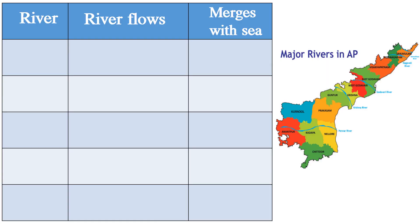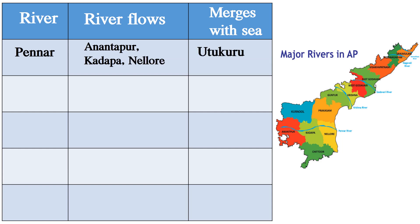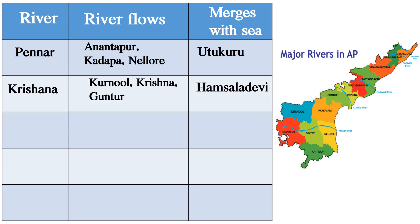Now, let us recap the rivers, where they flow, and where they merge into the sea. First, Penna River flows through Anantapur, Kadapa, and Nellore districts and merges with the Bay of Bengal at Uthukota. Next, Krishna River flows through Krishna, and Guntur districts and merges with the Bay of Bengal at Hamasaladeevi.